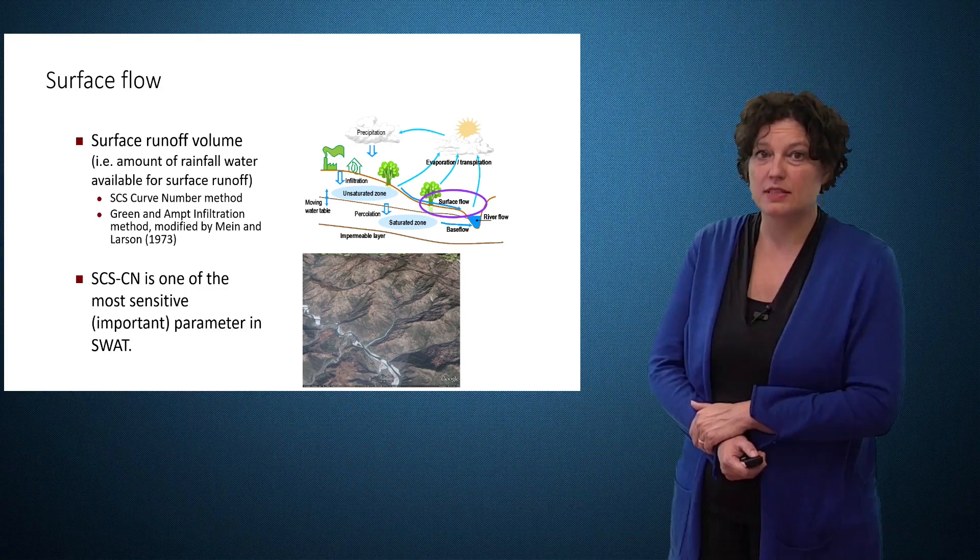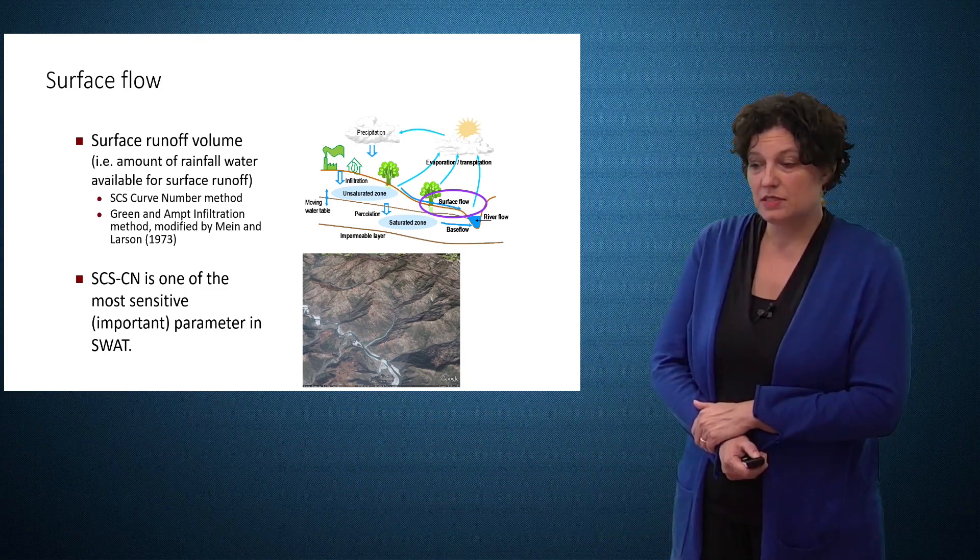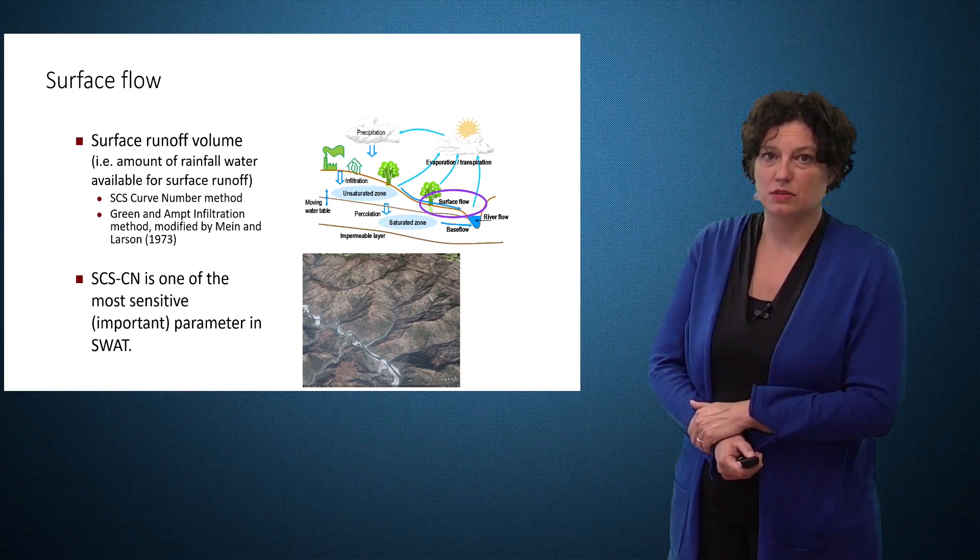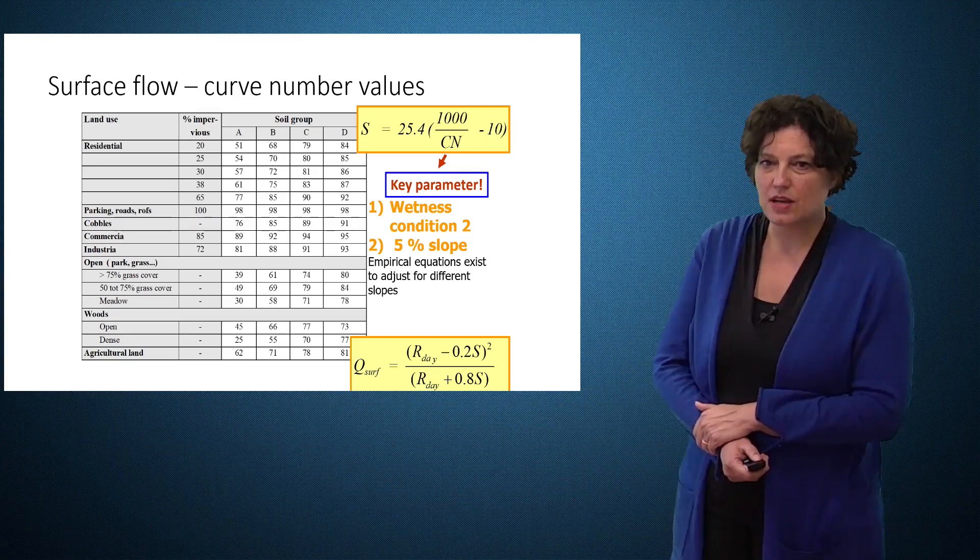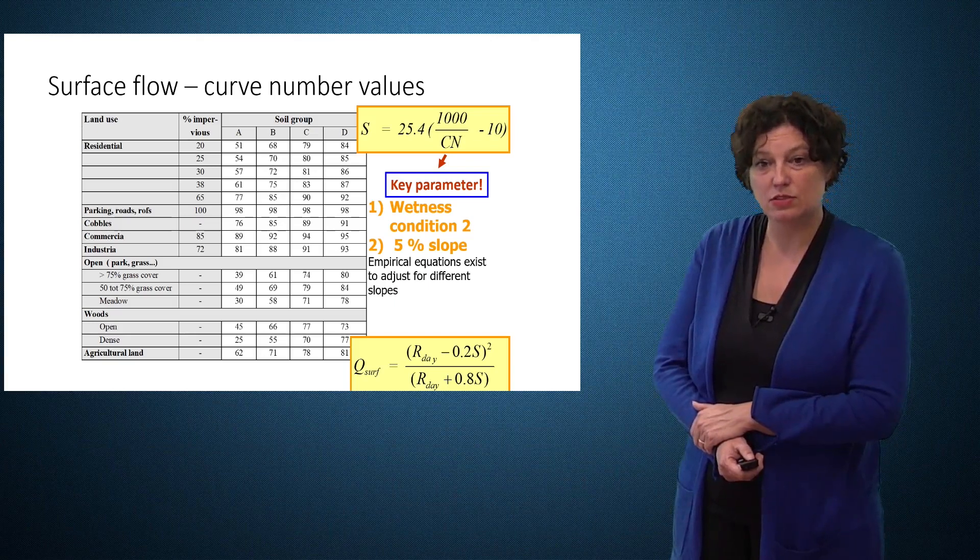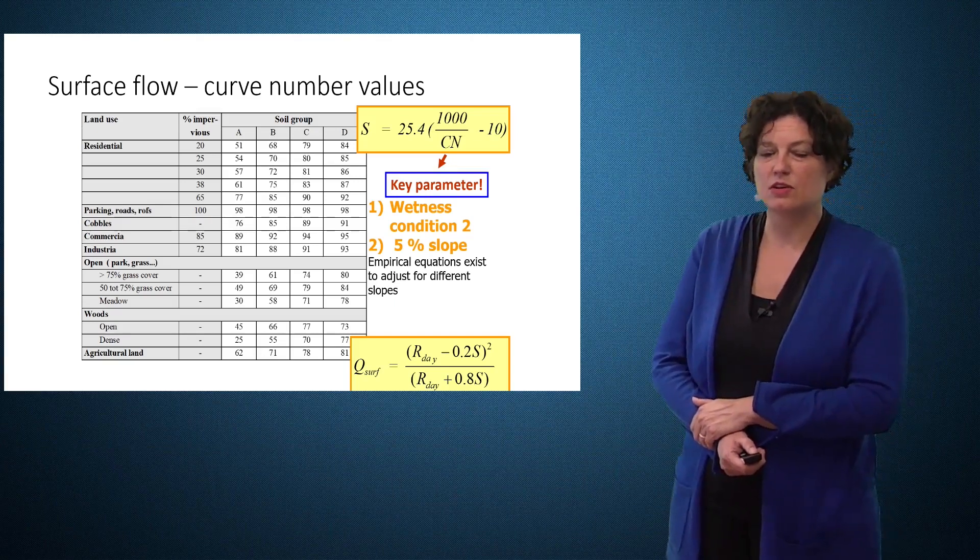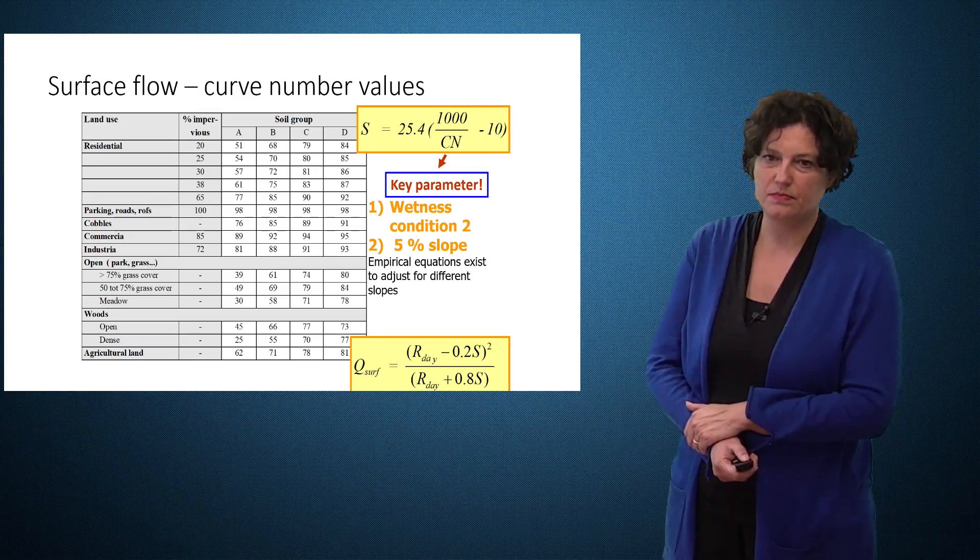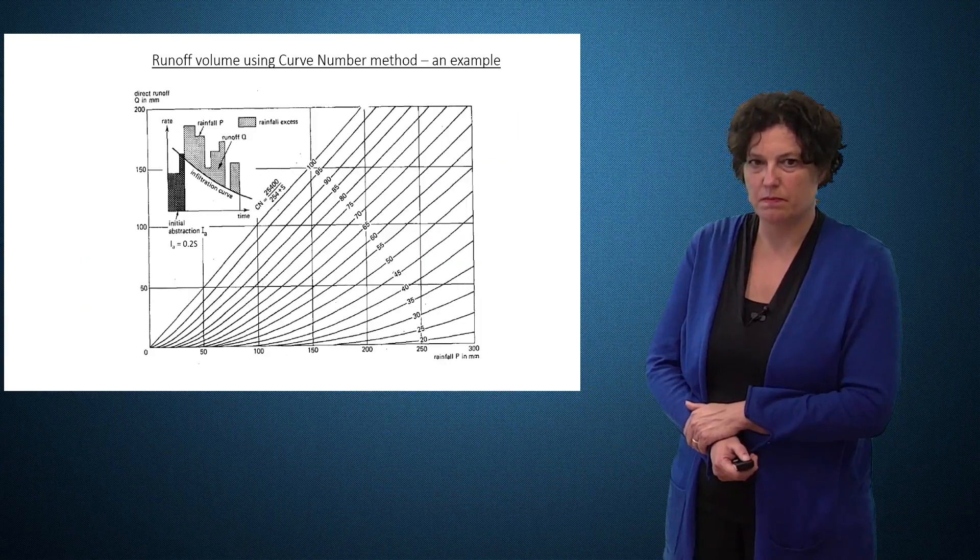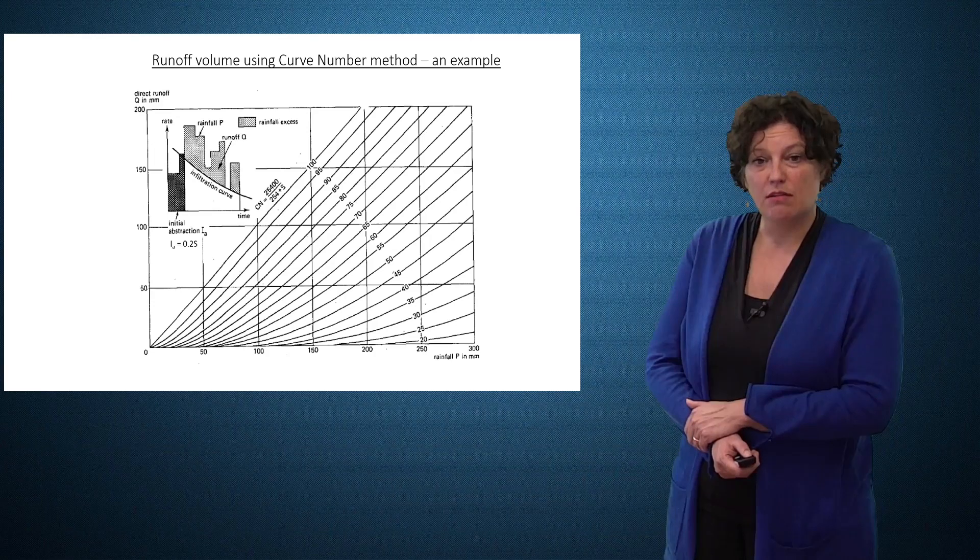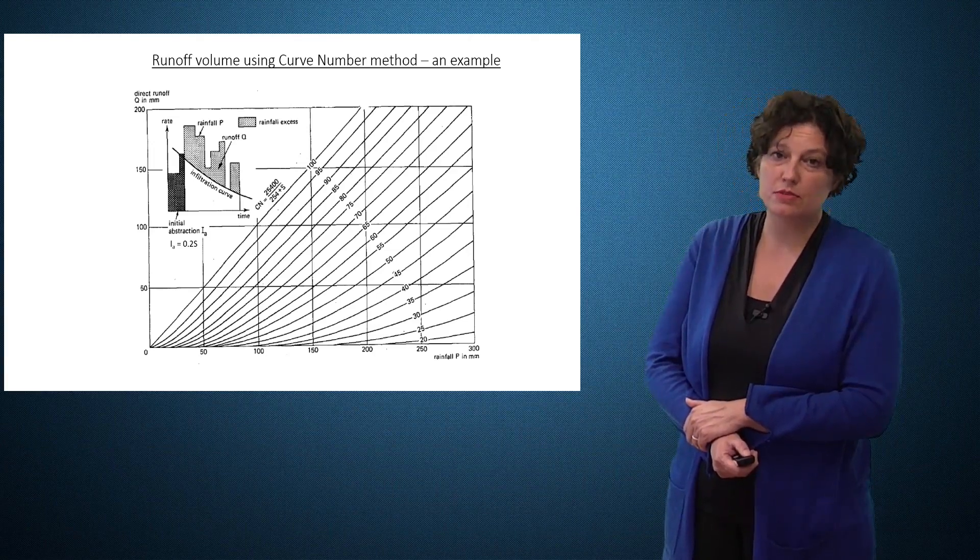For the surface flow there are two methods implemented in SWAT, but the most popular by far is the curve number. For this reason the curve number is one of the most sensitive parameters in SWAT. The curve number CN is used to calculate S, and S is then further used to calculate the surface runoff. There are many literature values for the curve number and they are assigned according to soil properties and land use properties. It's quite logic: high curve numbers give high surface runoff and low curve numbers give low surface runoff.